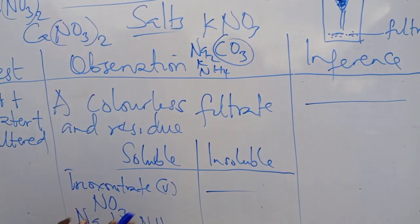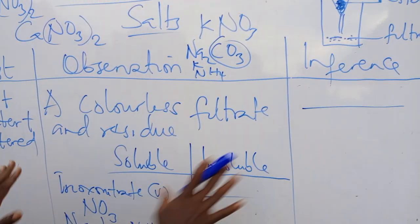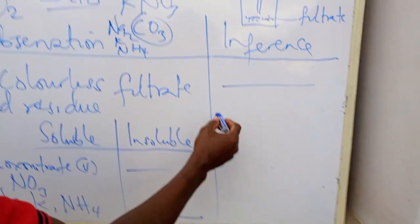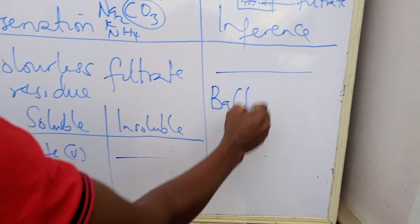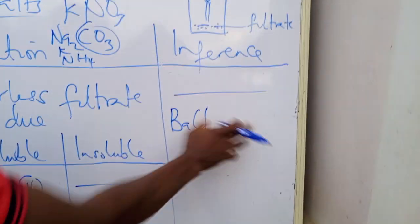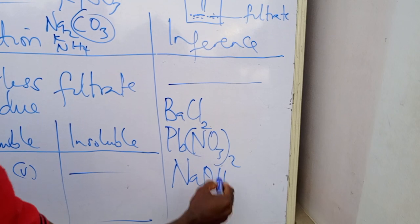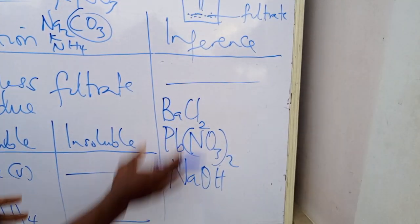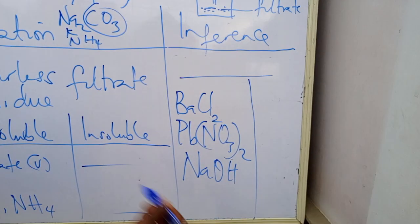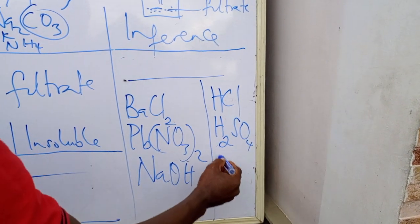I will also give you some precipitating reagents. These include barium chloride, lead(II) nitrate, and sodium hydroxide — these are the major precipitating reagents given to students during exams. We'll also look at some acids they give students: hydrochloric acid, tetraoxosulfate(VI) acid, and trioxonitrate(V) acid.